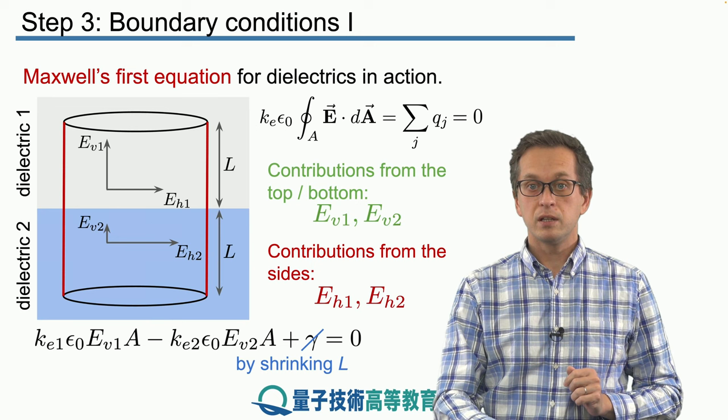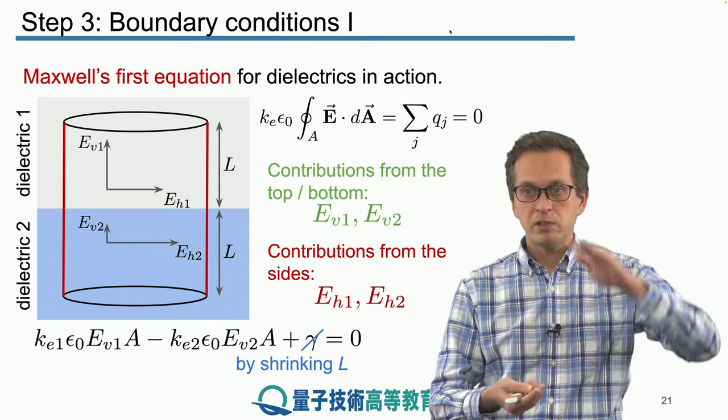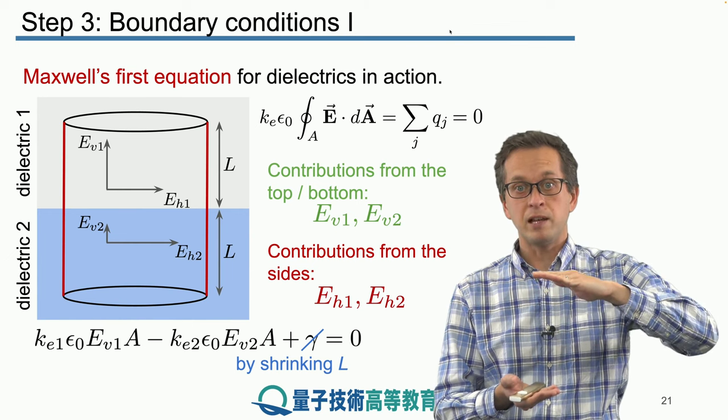Simply we shrink the height of the cylinder. If we are shrinking the height of the cylinder, in other words we take the limit of L going to zero, there will be no flux going through the sides.